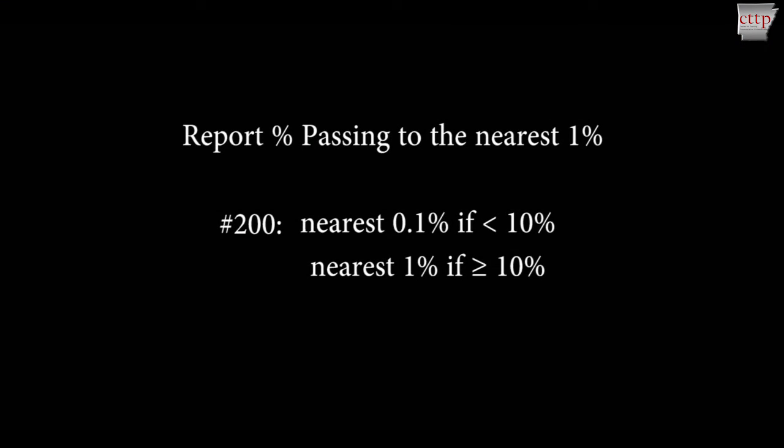Calculate the percent retained and percent passing each sieve. Report the percent passing each sieve to the nearest 1%, except the number 200 sieve. For this sieve, report to the nearest 0.1% for values less than 10, and to the nearest 1% for values greater than or equal to 10.